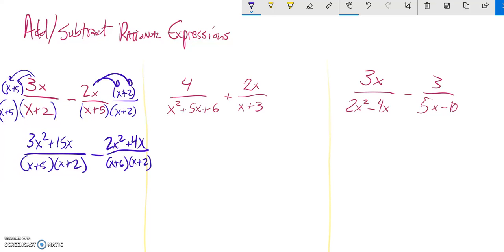Same denominator, and notice here I'm subtracting. So I'm subtracting each of these pieces, so these both get negated. This is going to be negative 2x squared and negative 4x.